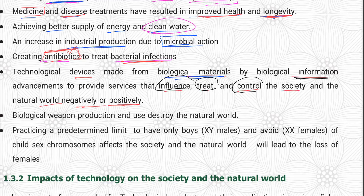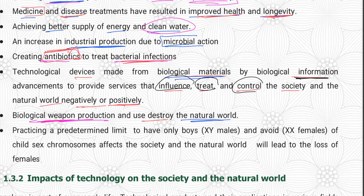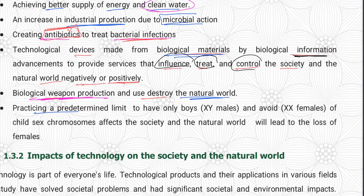The biological weapon production and use destroys the natural world. The biological weapon is an infection — a virus — and represents a negative effect. Practicing a predetermined limit to have only boys using XY male chromosomes and avoiding excess females affects society and the natural world, leading to the loss of females.